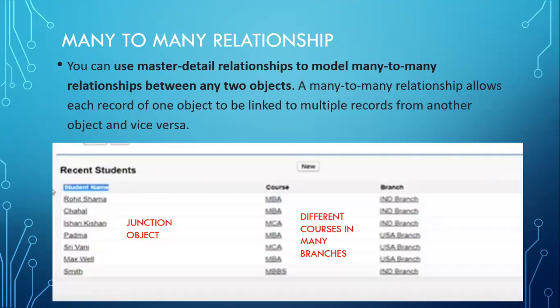Coming to many-to-many relationship. You can use master-detail relationship to model a many-to-many relationship between any two objects — that is, by selecting master-detail relationship, we can also do many-to-many. Many-to-many relationship allows each record of one object to be linked to multiple records from another object and vice versa. But a junction object is mandatory here. As we can see, course and branches are in a many-to-many relationship, whereas the junction object is the student.